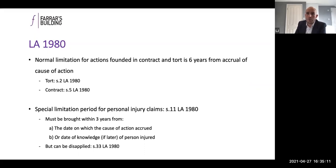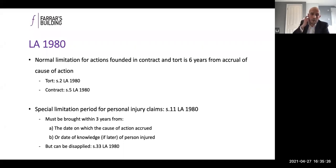The three-year period runs from the date of the cause of action — essentially the injury — or the date of knowledge of the person who is injured. If a claim is outside the primary limitation period, it can be disapplied by way of section 33. Lauren will be dealing with cause of action accrual and date of knowledge, and I'll touch on section 33 and other self-contained matters.